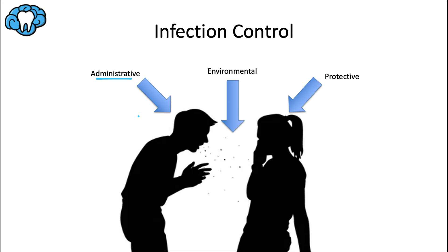Environmental control means reducing the spread and concentration of droplets — for example, having isolated rooms for suspected or confirmed cases, using high-efficiency particulate air (HEPA) filters, or ultraviolet germicidal irradiation.